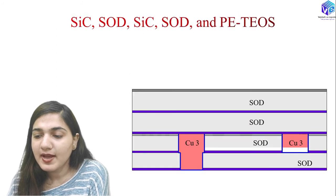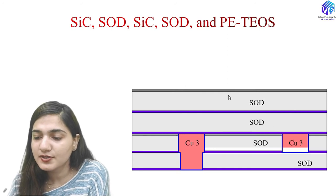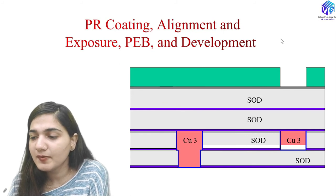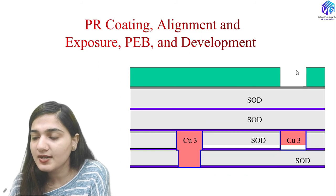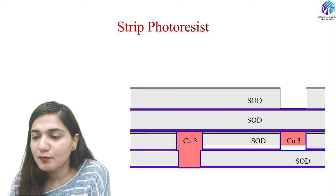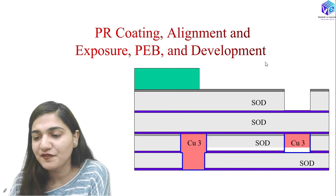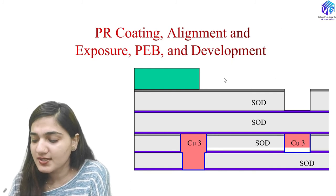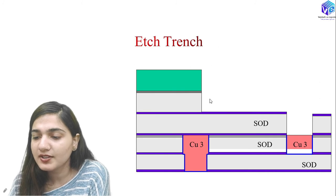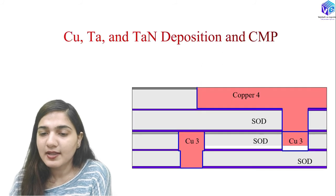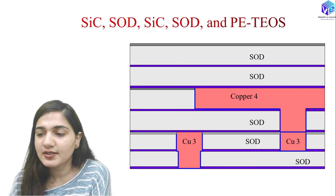All these processes are repeated: photoresist coating, alignment, exposure, PEB, development, via-4 etch, strip photoresist, photoresist coating again, alignment, exposure, PEB, development, trench etch in SOD (stopping on silicon carbide), strip photoresist. This is followed by hydrogen plasma cleaning and copper, tantalum, and tantalum nitride deposition with CMP to complete further copper metallization layers.